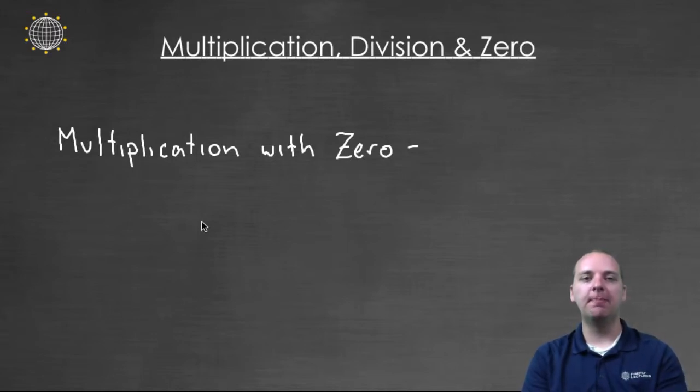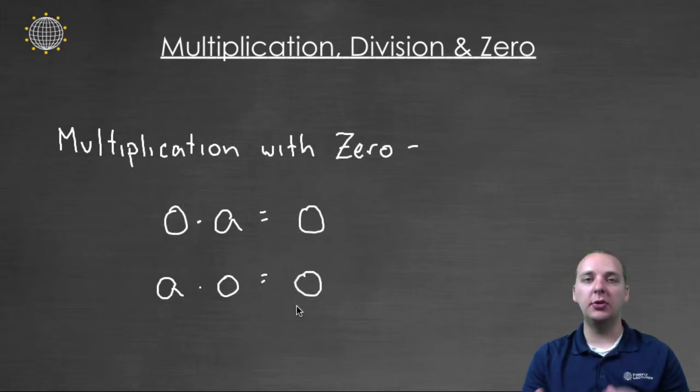Let's start with multiplication. If you're taking zero and multiplying zero by any number, it doesn't matter what number it is, automatically this product will be zero. This is also true if you reverse the order. If you had a number times zero, the product is still zero. So as long as you have zero in a product, it doesn't matter how many terms you have, the product will always be zero regardless.